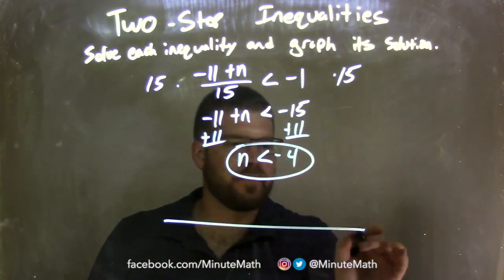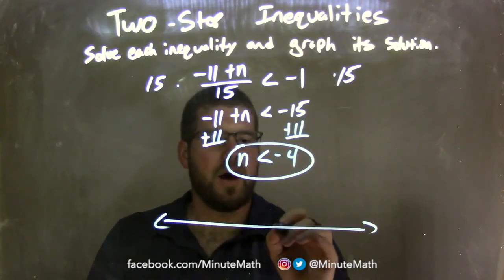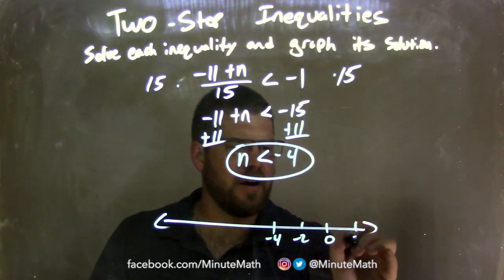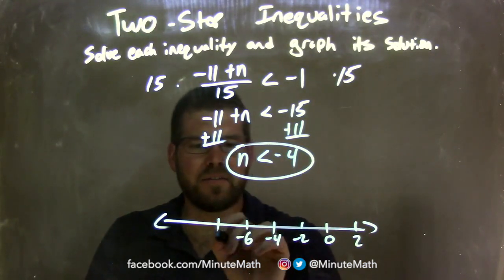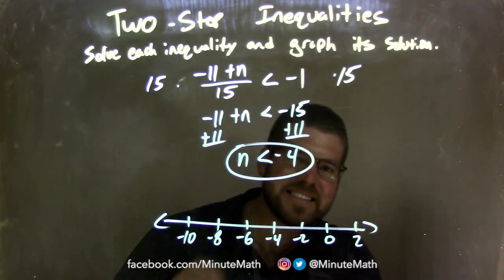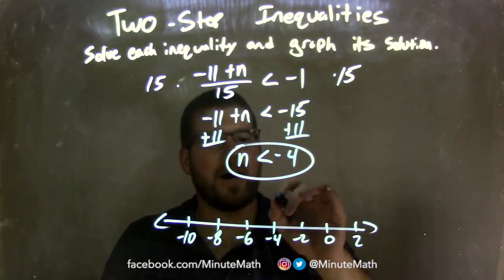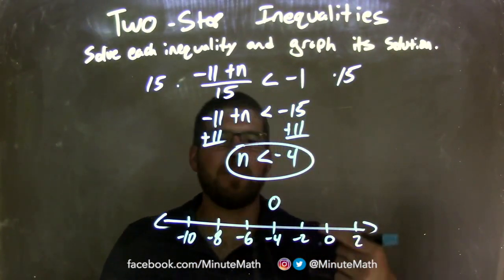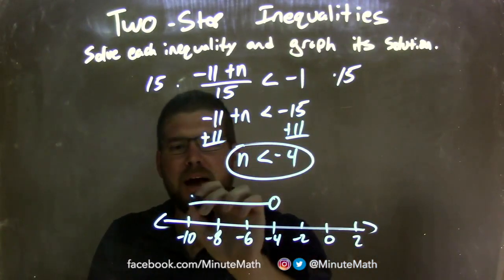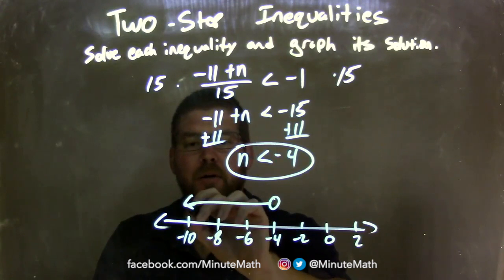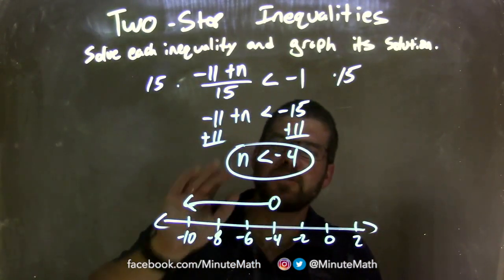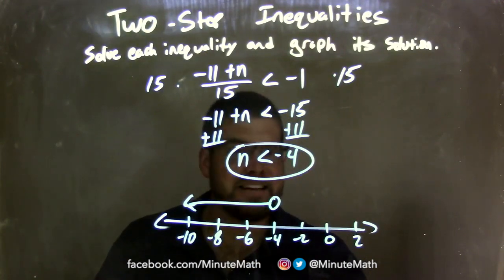Now I need to graph it. Let's put negative 4 here and go by 2s: negative 2, 0, 2, and negative 6, negative 8, negative 10. Since n is less than negative 4, it's not equal to, so I need an open circle at negative 4. Since it's less than, my arrow goes to the left. I have a graph that represents and matches our answer of n is less than negative 4.